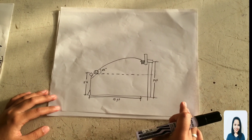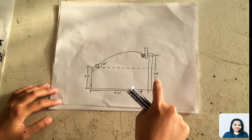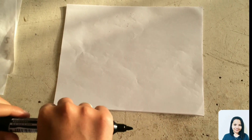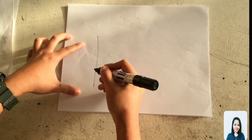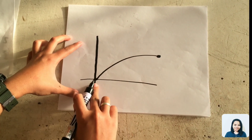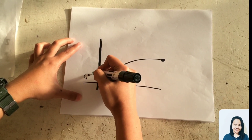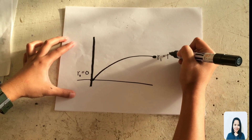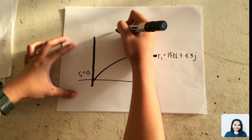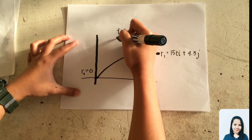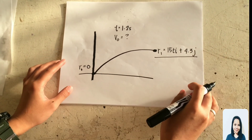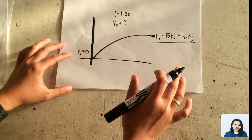Ito yung drawing natin. Kung nakikita nyo, may mga vertical and horizontal distances na given, which is 10 feet, 5.7 feet, 15 feet, at may angle na 45 degrees. Dito yung origin at meron kang initial position na 0. Dito yung final position mo na 15T i plus 4.3 j. May given na time, which is 1.2 seconds, at ang hinahanap ay initial velocity.